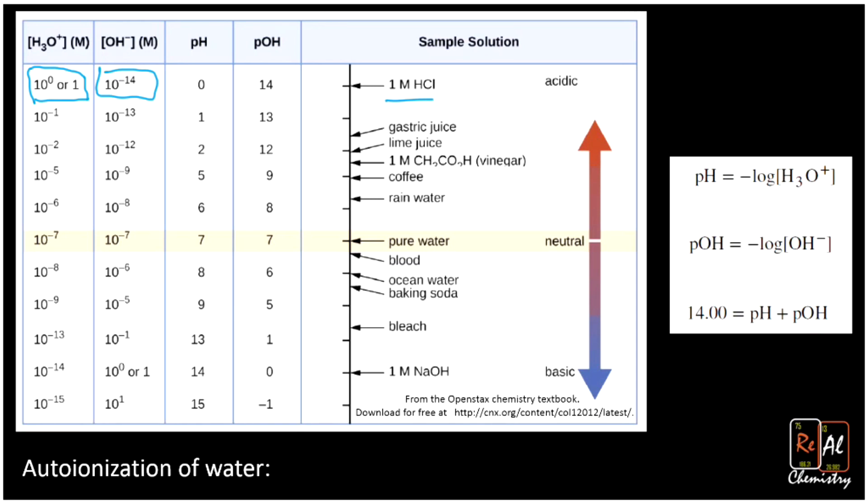And as we get more basic, we get more and more hydroxide, as you'd expect, and less and less hydronium ions. So when you go down to NaOH, a strong base, you see that you have about one molar hydroxide and 10 to the minus 14 molar H3O+.